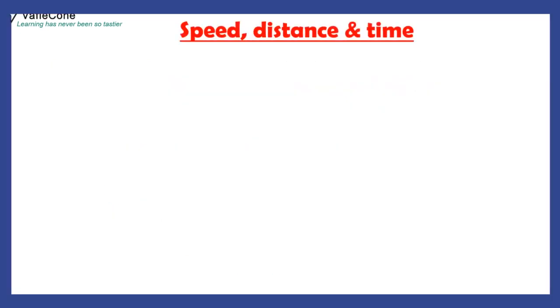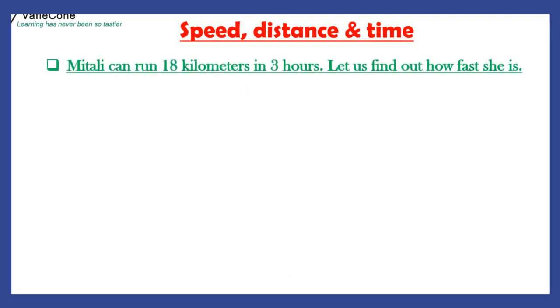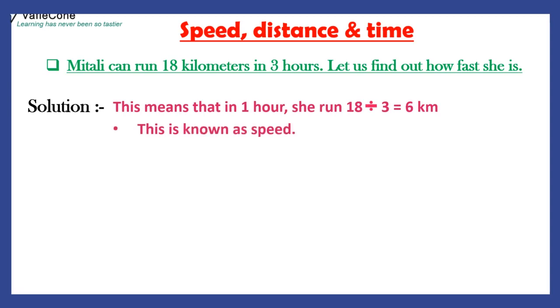Speed, distance and time. Mitali can run 18 kilometers in 3 hours. Let us find how fast she is. Solution: This means that in 1 hour, she ran 18 divided by 3 equals 6 km. This is known as speed. Speed is defined as the distance covered per unit of time.